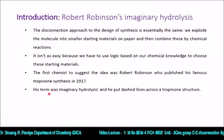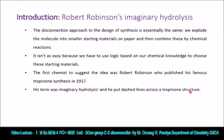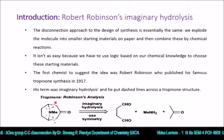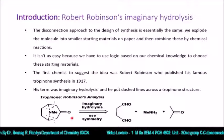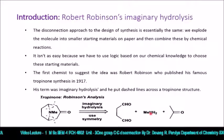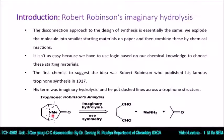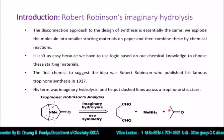The first chemist to suggest this idea was Robert Robinson, who published his famous tropinone synthesis in 1917. He didn't know he was opening a new branch of chemistry known as retrosynthesis. He gave the term 'imaginary hydrolysis' to his work and put dashed lines across the tropinone structure, breaking it into three fragments: a dialdehyde, methylamine, and acetone. He used symmetry for that.